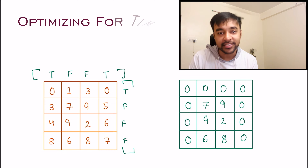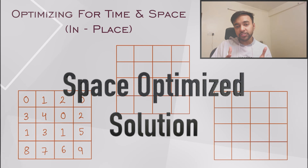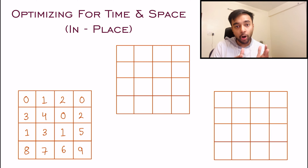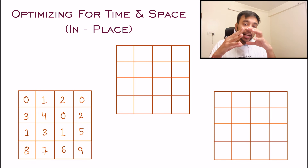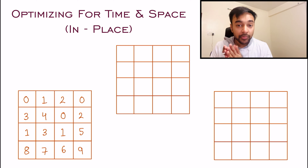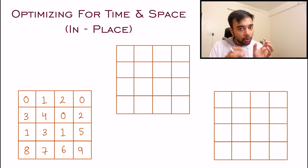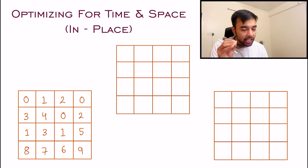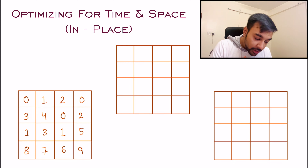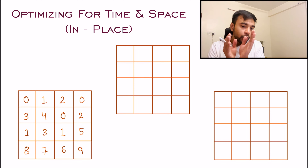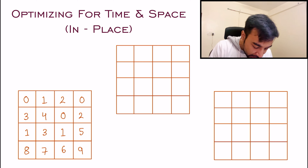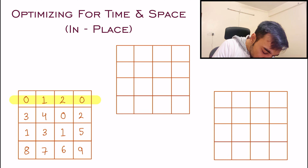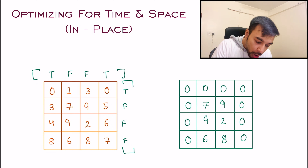So how can we optimize for space? When trying to optimize, you first have to identify what you want to optimize. In the previous solution, we used extra arrays to store intermediate results. Now we want to eliminate that. There is a neat little trick: you can use the first row and the first column of the matrix itself to store all of those similar results.